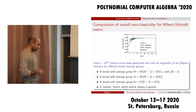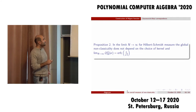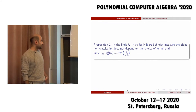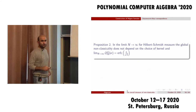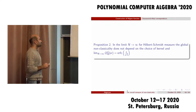This quantumness does not depend on the choice of kernel. In the limit of n going to infinity, for the Hilbert-Schmidt measure, the global non-classicality does not depend on the choice of kernel and has an exact limiting value. Moreover, we have shown — or at least we have strong clues — that this quantity does not depend on the choice of distance function on the state space. This is a very interesting result, because it means that this quantity is some kind of topological invariant.